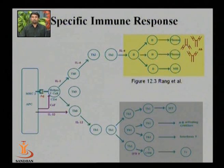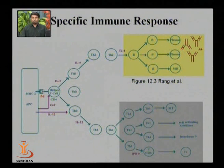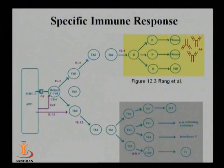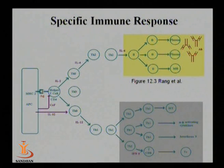Once T helper cells recognize antigenic peptides via MHC class 2 proteins, they become activated and certain signaling pathways start inside. As an end product, T helper cells release interleukin-4, which activates B cells. These B cells convert into plasma cells which release antibody — this is the induction of antibody-mediated immune response. If T helper cells encounter multivalent or lipidic material, they release interleukin-2 cytokines, activating T cytotoxic cells.